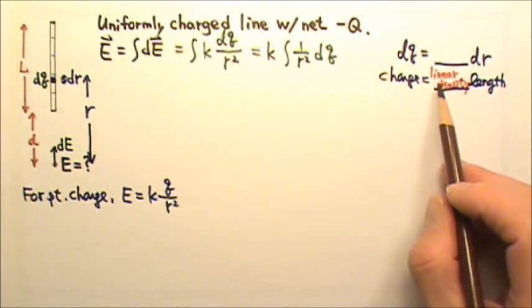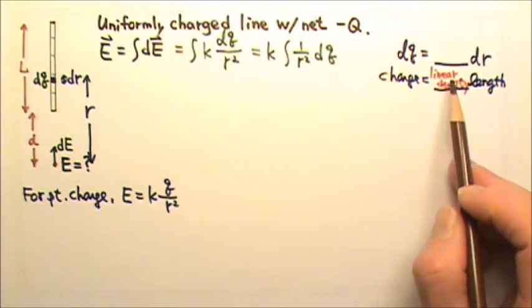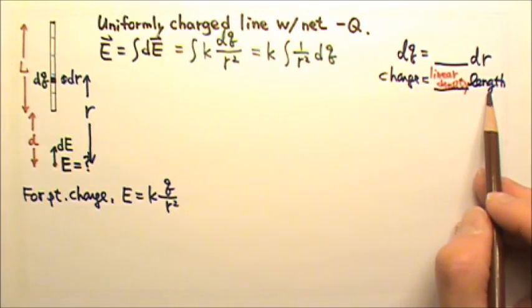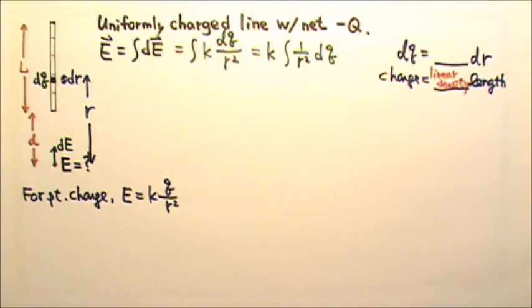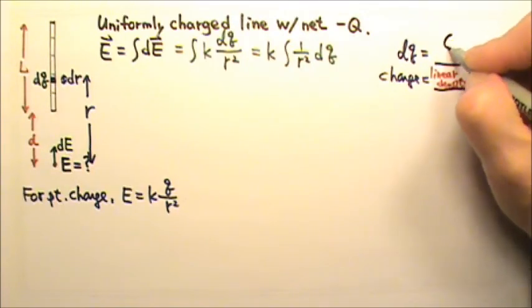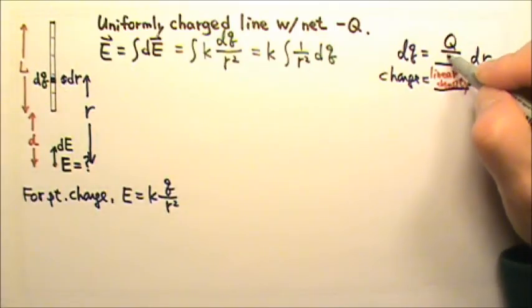What goes here should be the linear charge density. So the charge equals the linear charge density times the length. And what is the linear charge density for this line of charge? It would be the total charge Q divided by the total length L.